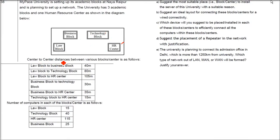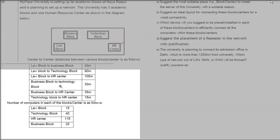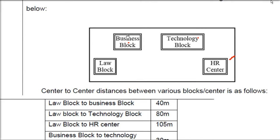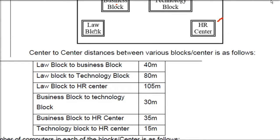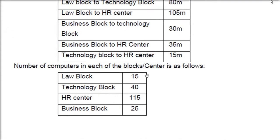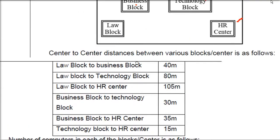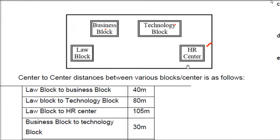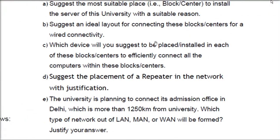Center-to-center distances are given in meters. For example, the distance between the Business Block and Law Block is 40 meters, and Law Block to HR is 105 meters. The HR center has the highest number of computers — 115 — while the Law Block has the least.